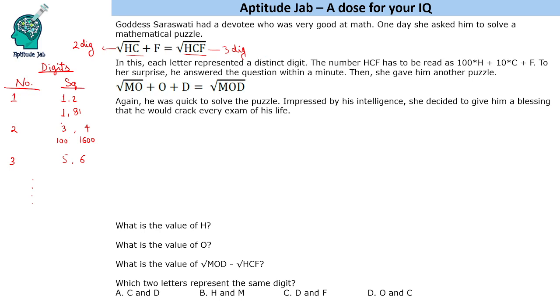Now we have a three digit square number here and we have a two digit number here, square number here. So its square root will have two digits. So under root HCF will have two digits and this will have one digit. Now one digit plus one digit which is F gives you a two digit number. When we are adding two single digits and we are getting a double digit, so the two digit number has to be less than 20.